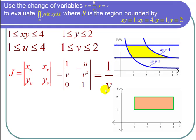Typically you take an absolute value, but since v is always positive, it's between 1 and 2, the absolute value of 1 over v is 1 over v.